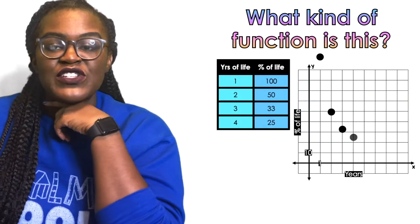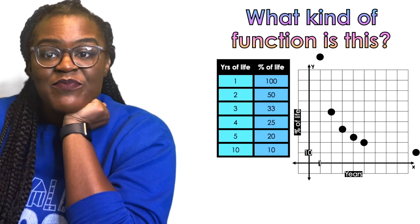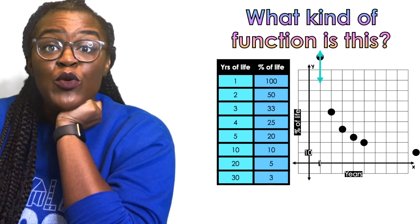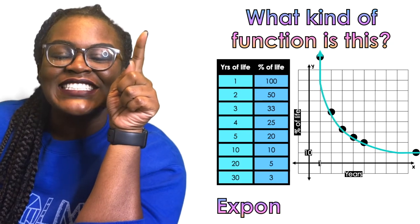Five years, 20%. Ten years, 10%. 20 years, 5%. 30 years, 3%. Swoop. What does that look like? Exponential decay.